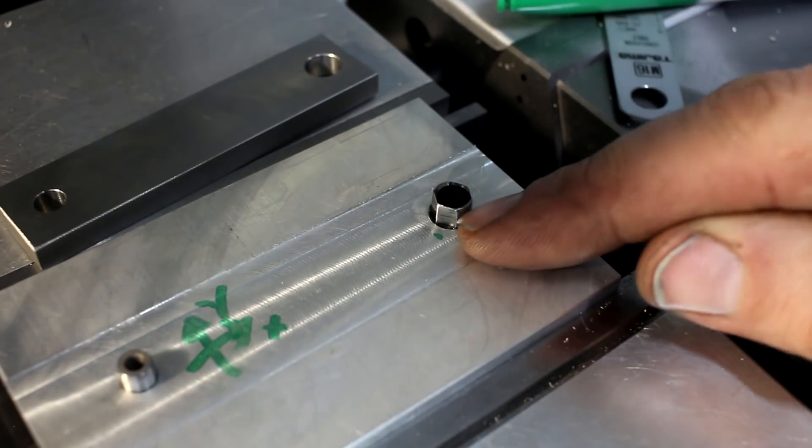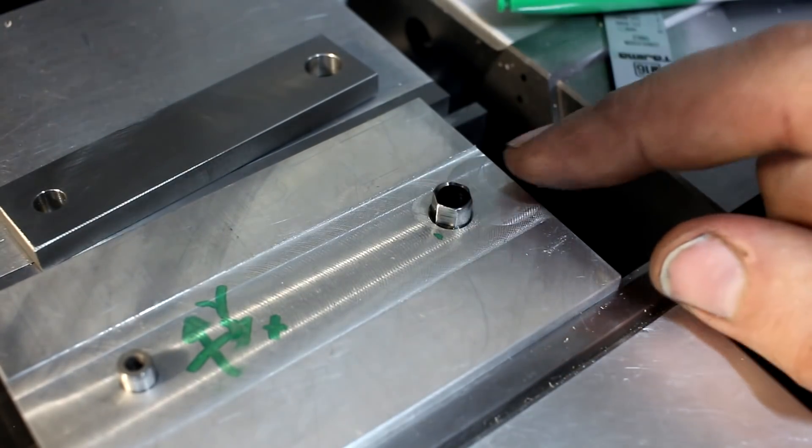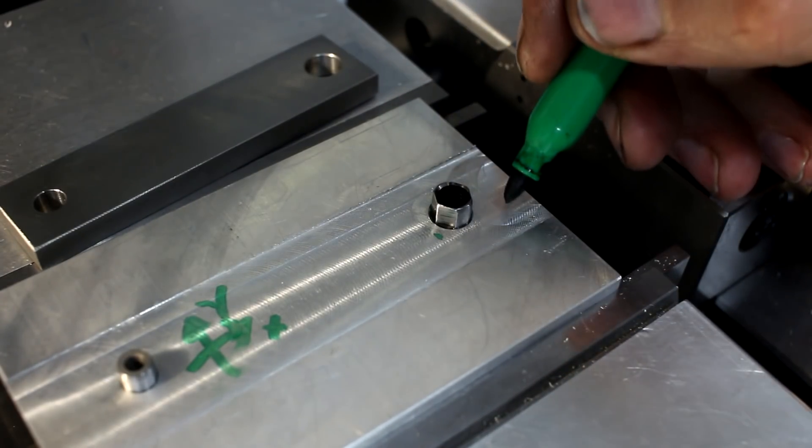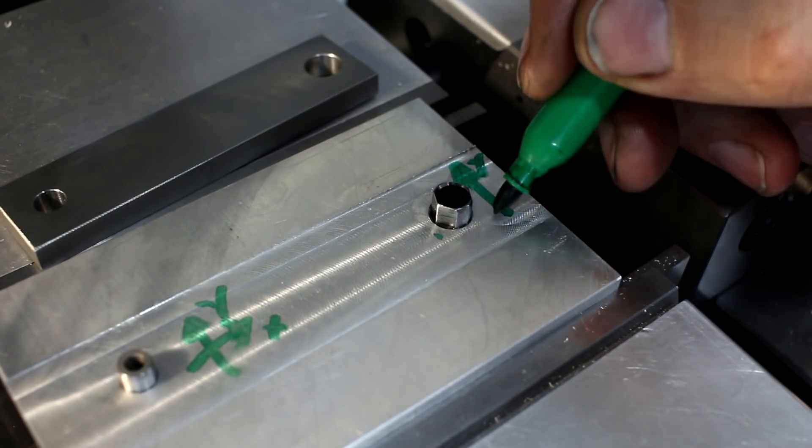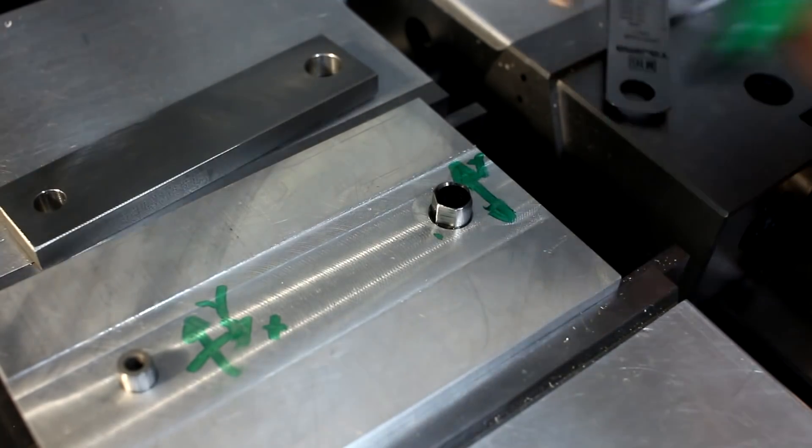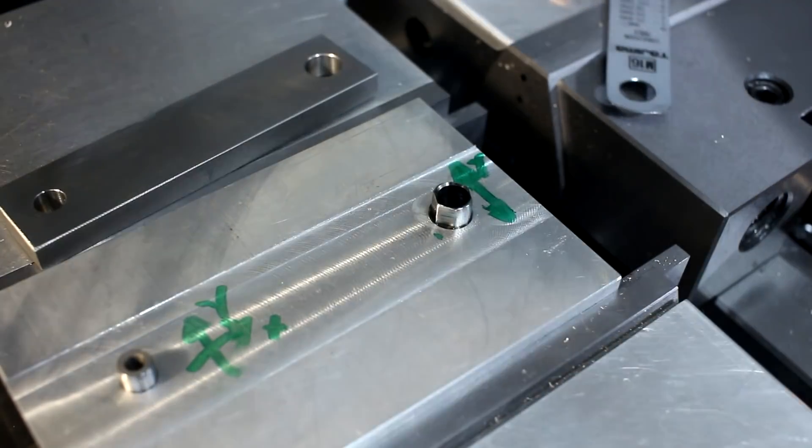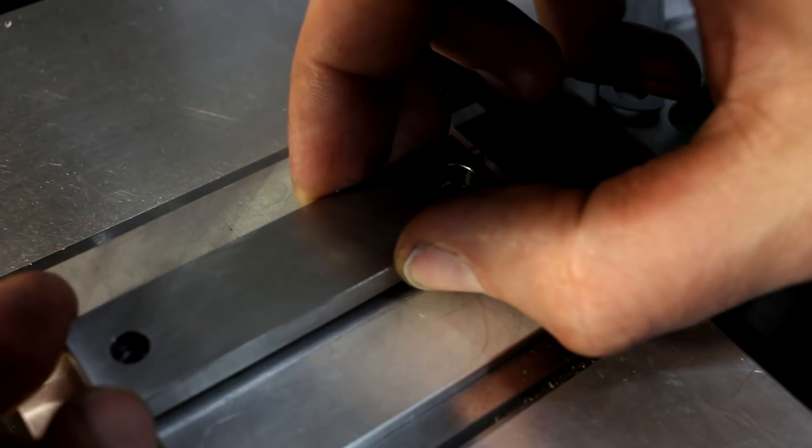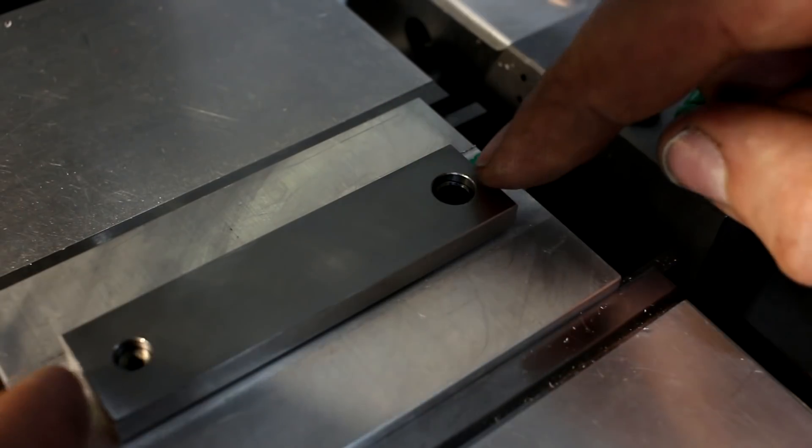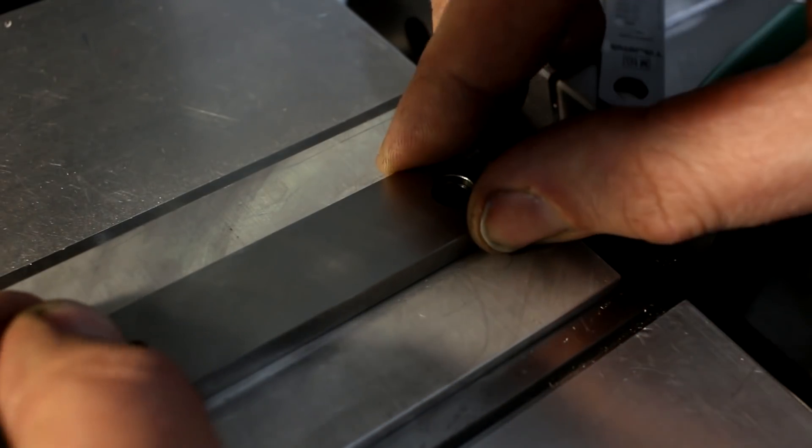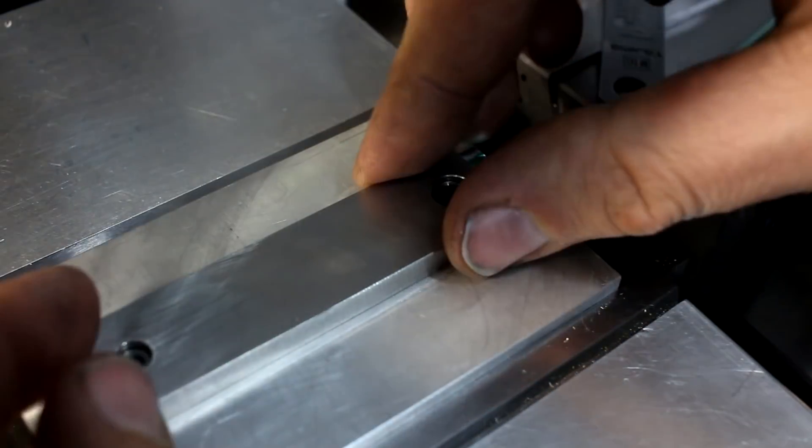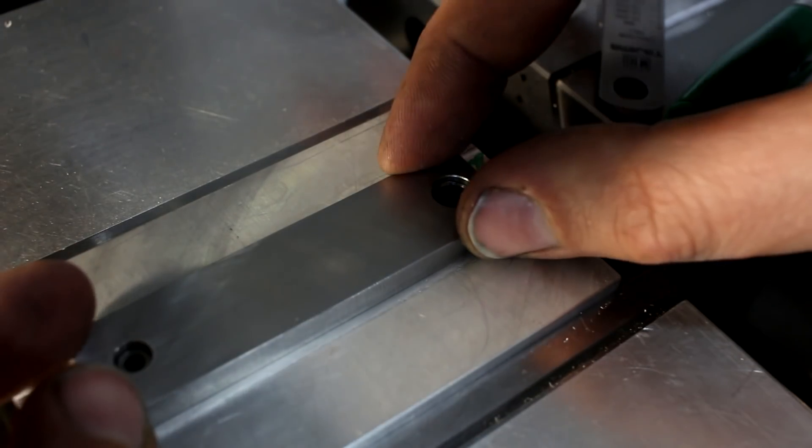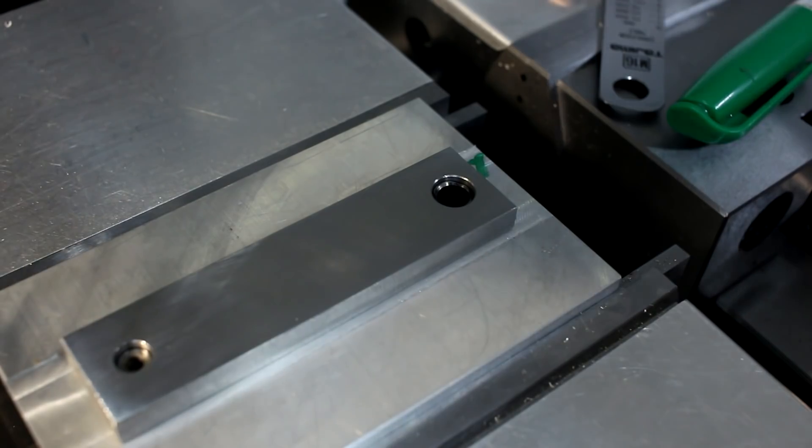For that reason you modify the second pin like this. So it's only locating in this direction or the other direction of course, plus minus Y. If we put the part on now, it goes very nicely on the left pin and on the right pin. Then it cannot rotate and it can also not move in XY.